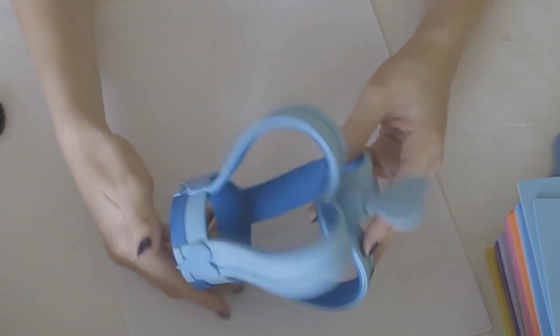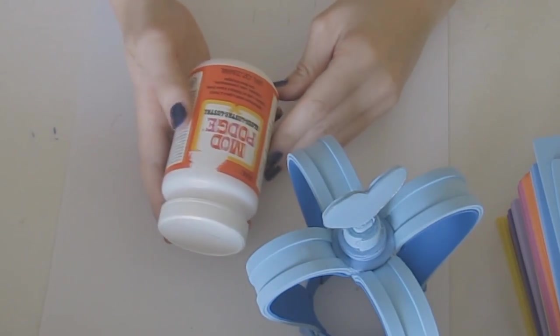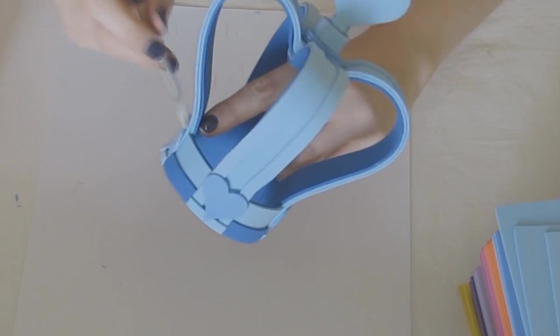Once you're happy with your structure you can move on to sealing. I used Mod Podge to seal my craft foam but wood glue or white glue works just as well. You want to seal craft foam before painting it because it's a porous material and will absorb a lot of your paint if you don't create a protective barrier for it.